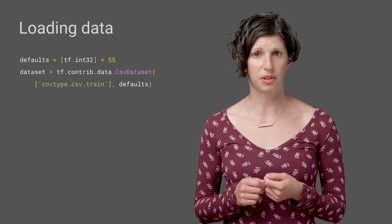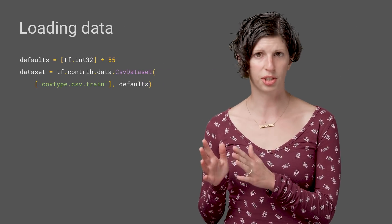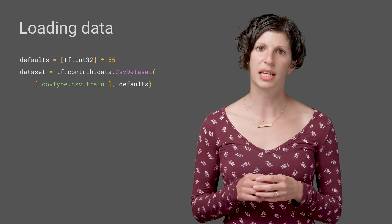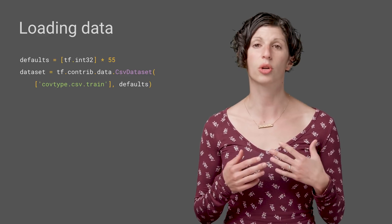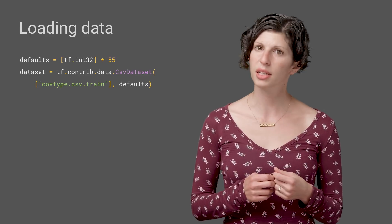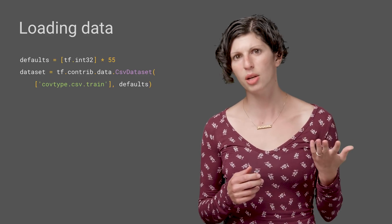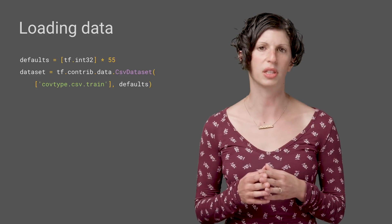The first thing we're going to want to do is load our data in and process the data and columns so that we can feed it into a model. The data is a CSV file with 55 columns of integers. We'll go over each of those in detail in a bit, but first we will use the TensorFlow CSV data set to load our data from disk. This particular data set doesn't have a header, but if it did, we could process that as well with the CSV data set.